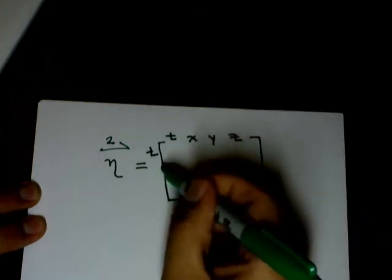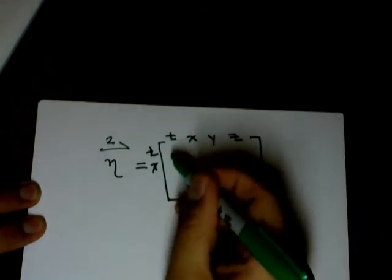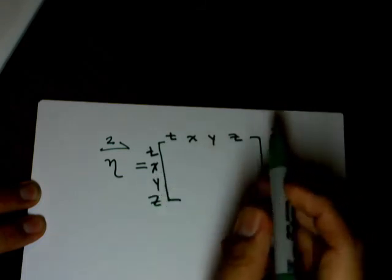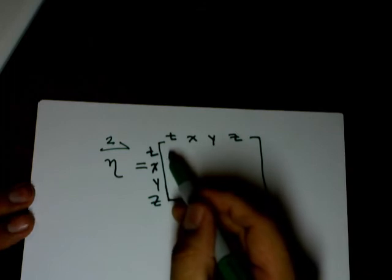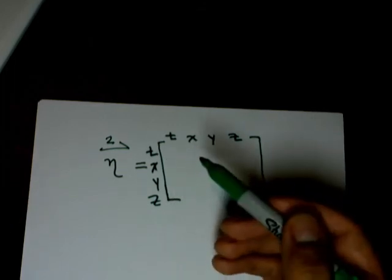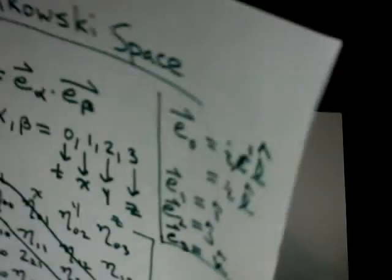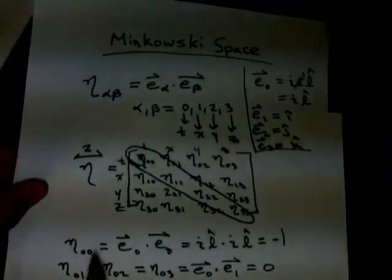And likewise, time, x, y, z. So in the previous page, we saw that our eta sub 0 0 is minus 1.